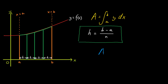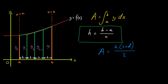The area of a trapezium is height multiplied by (C plus D) over 2. If you'd like to find out how this formula is derived, please visit the link below this video. We're going to call the heights Y0, Y1, Y2, Yn minus 1, and Yn respectively.